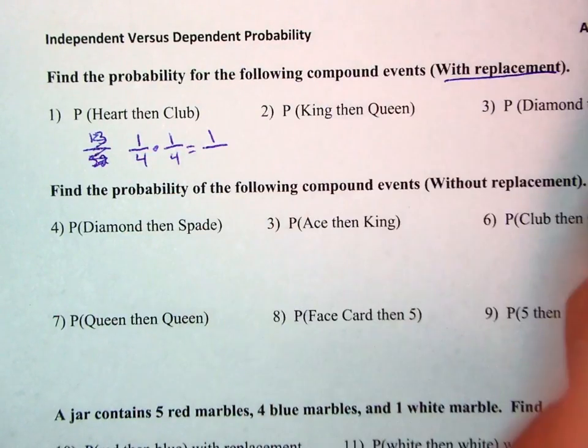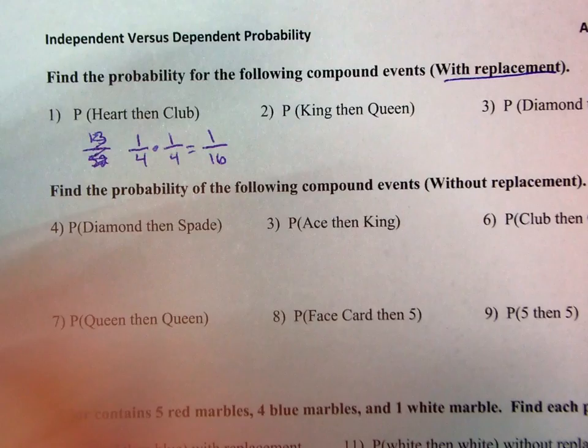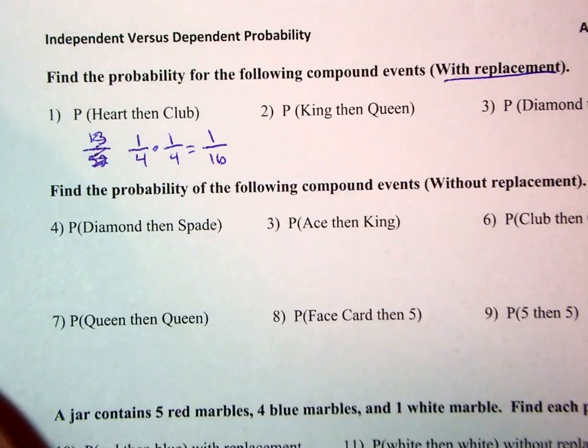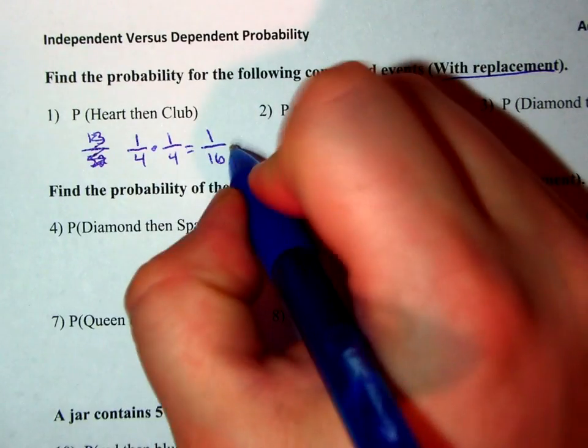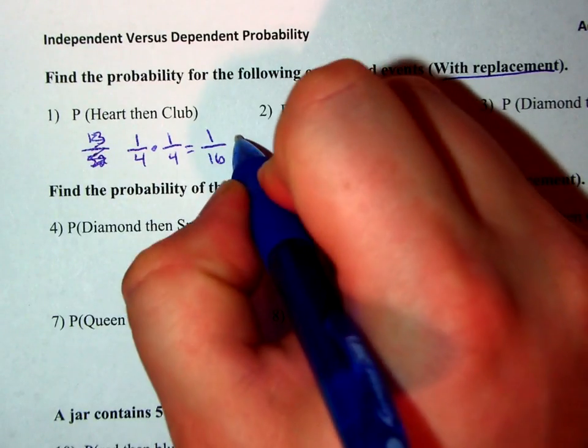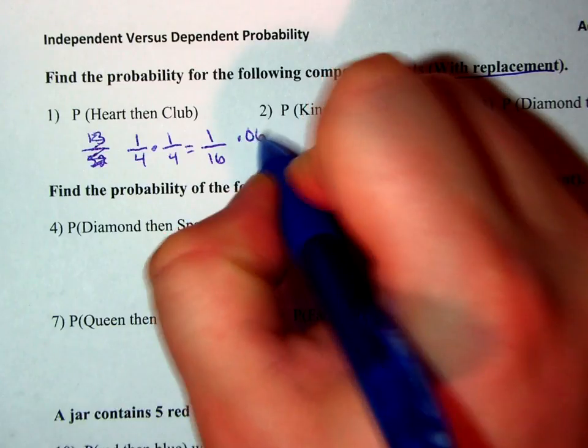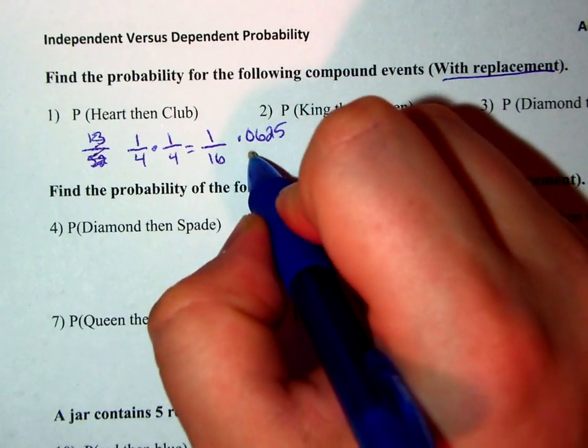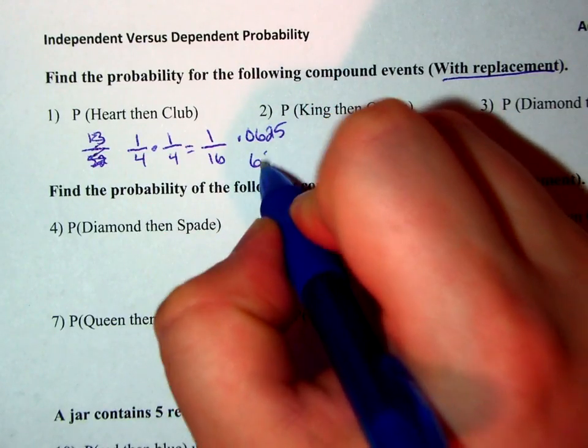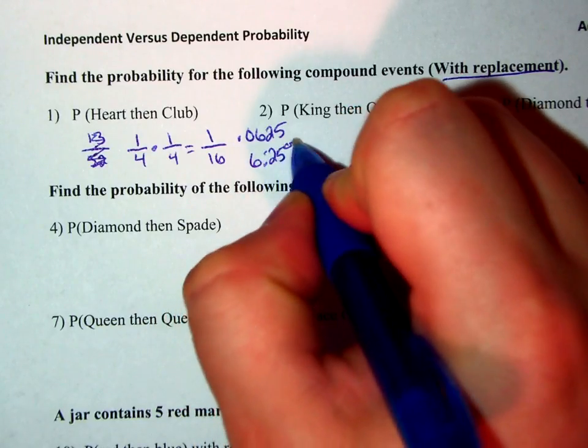So the probability of getting a heart then a club would be 1 over 16, which would equal .0625, which is going to equal 6.25%.